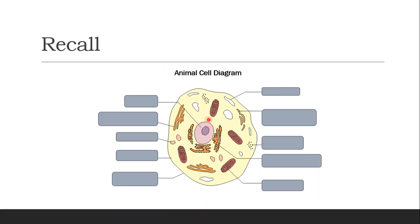This round big thing right here is the biggest component in an animal cell — it's the nucleus. Next, this structure is called a smooth endoplasmic reticulum. These small round structures right here are the lysosome. And this medium — the whole yellow jelly-like thing — we call this the cytoplasm.